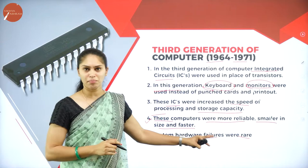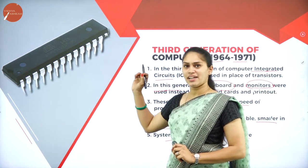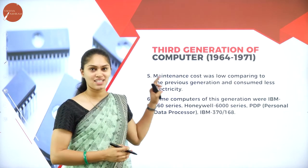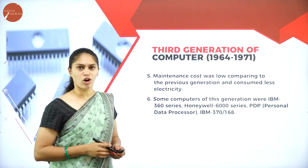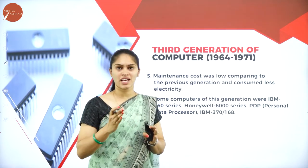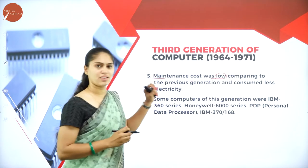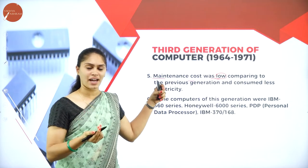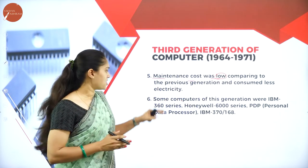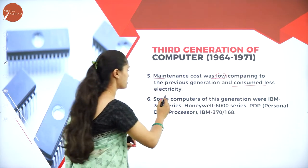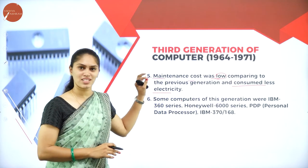In the third generation, hardware failures were minimum or even rare. Because of this, maintenance cost was low — if there are more hardware failures, maintenance cost is high, but that was not the case here. These computers also consumed less electricity and were smaller, faster, cheaper, and reliable.